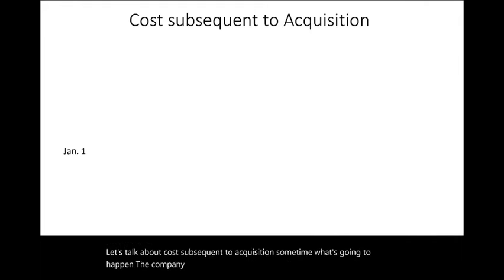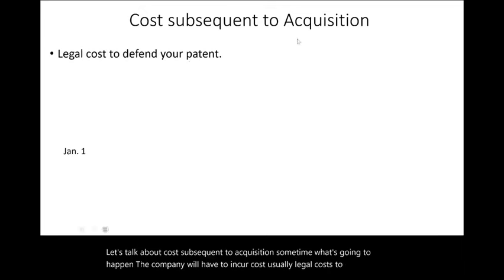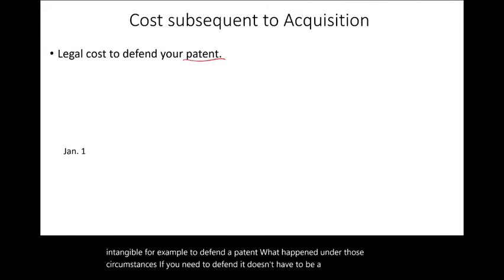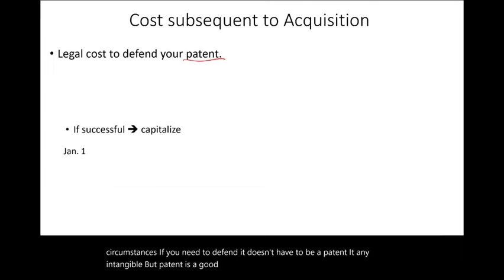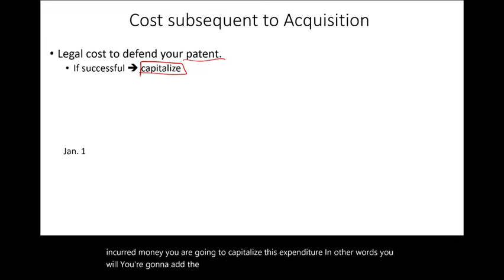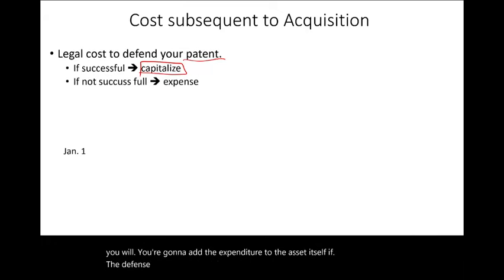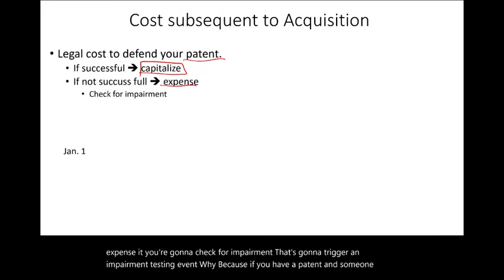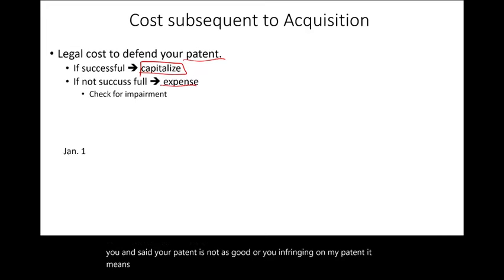Let's talk about costs subsequent to acquisition. Sometimes a company will incur costs — usually legal costs — to defend an intangible, such as defending a patent. If the defense is successful, you capitalize the expenditure by adding it to the asset itself. If the defense was not successful, you expense it, and that triggers an impairment testing event. Why? Because if someone sued you claiming your patent is not valid or you infringed on their patent, it means your asset lost value and you have to check for impairment.